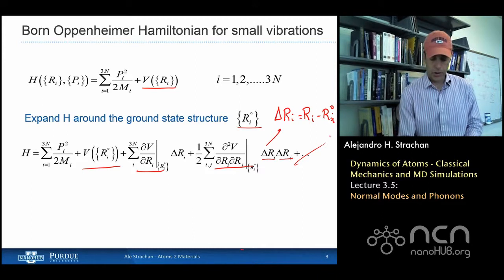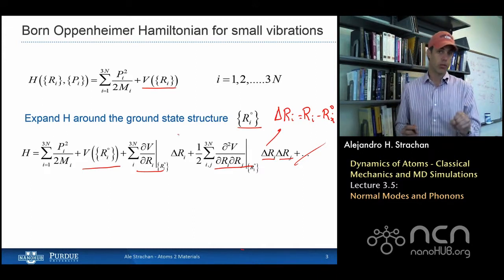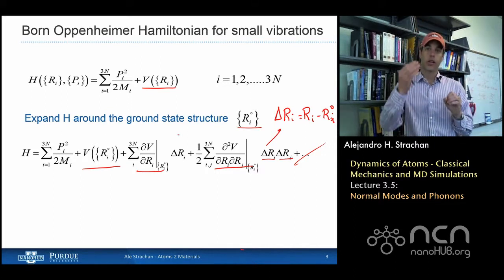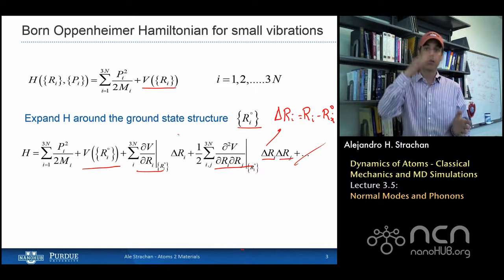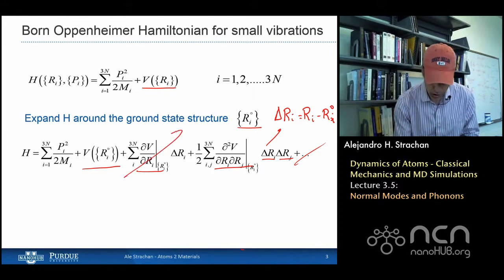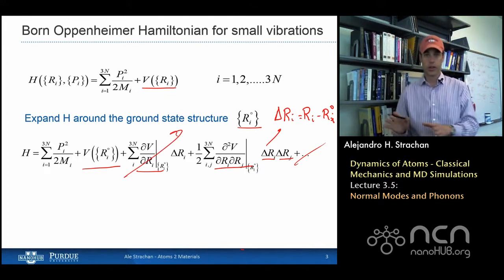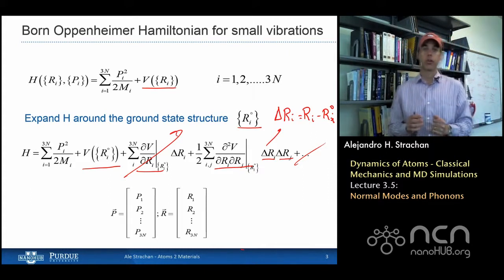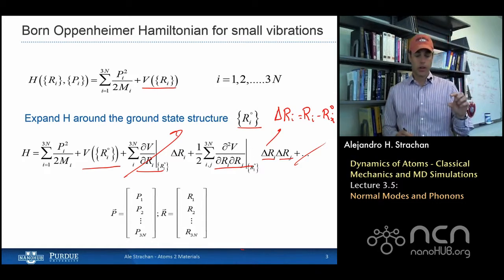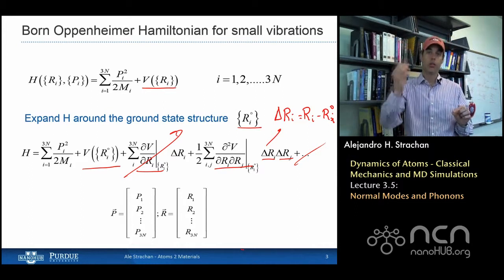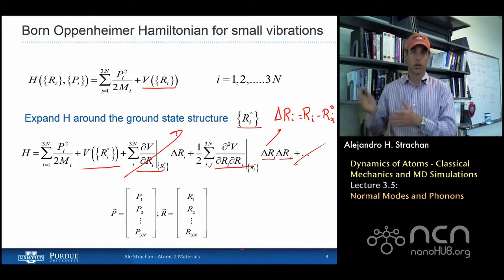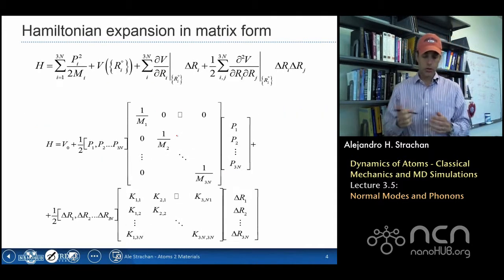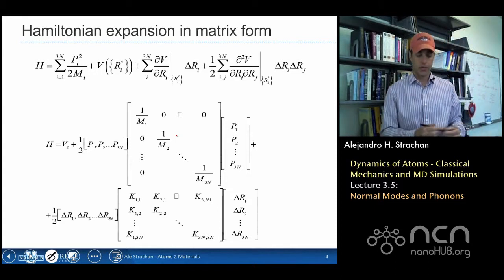The first-order expansion involves the derivative of the potential energy with respect to positions evaluated at the ground state. The derivative of potential energy with respect to position is force, and if I'm at the ground state, the force is zero because I'm at the minimum of potential energy — so the derivative is zero. Fortunately, the first-order term goes away and I'm left with the second-order term alone. Now I'm going to write this in matrix form. I write column vectors representing the momentum — p1, p2, p3, all the way to 3n — and do the same with the displacements delta r1, delta r2, delta r3.